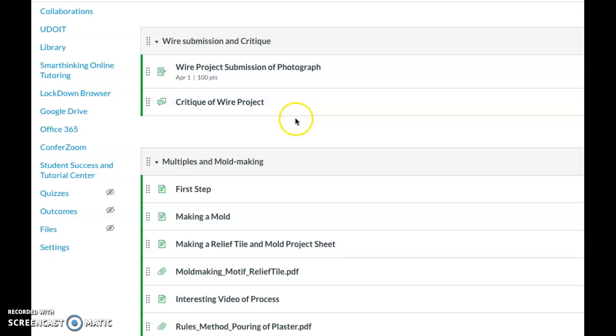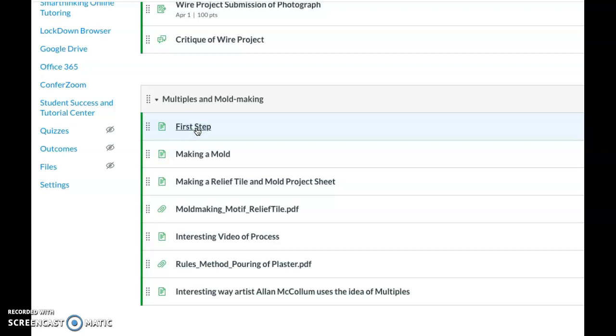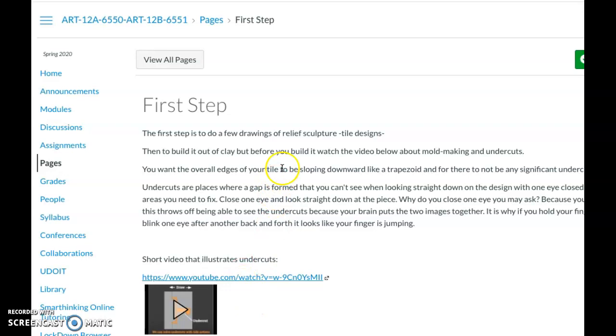The module is multiples and mold making, and this page about first steps talks about what to do first. You need to do a drawing first, then build it out of clay. But I want you to watch this video on this page about undercuts, because it's an important thing to understand so that when you make your clay tile, you don't create problems for yourself.